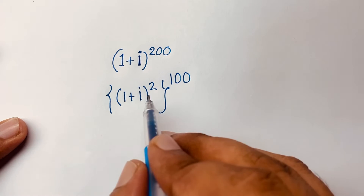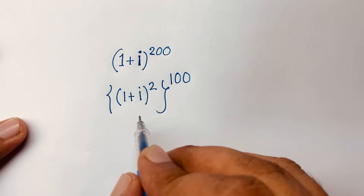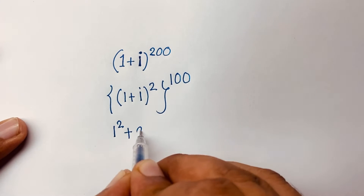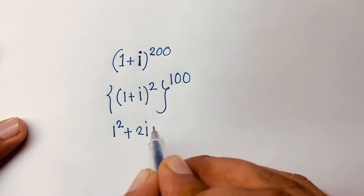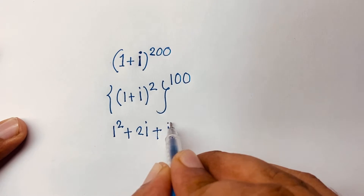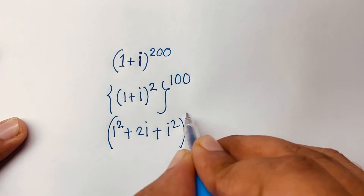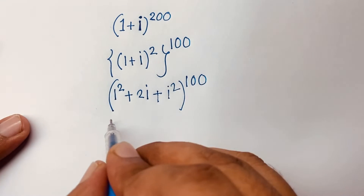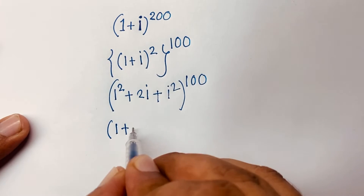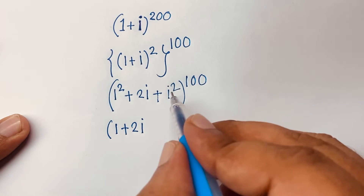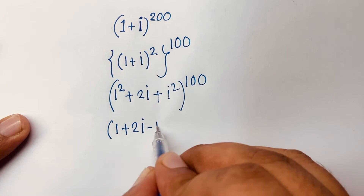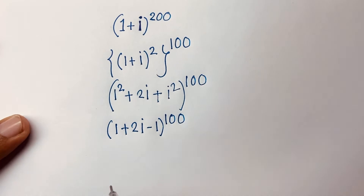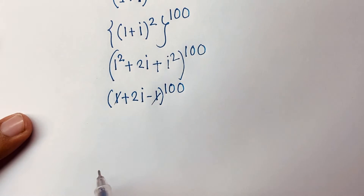Now I expand (1 + i)² using (a + b)² = a² + 2ab + b², which gives 1² + 2(1)(i) + i². Since i² = -1, this becomes 1 + 2i - 1, all raised to the power 100.